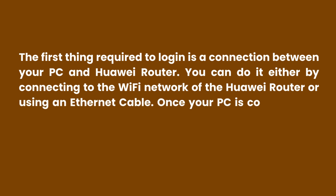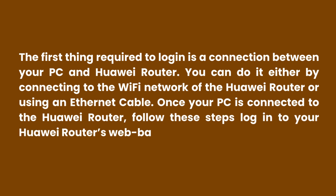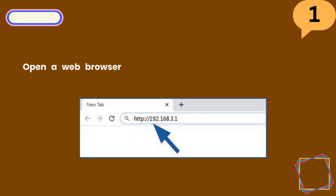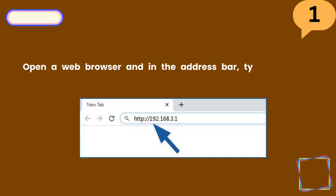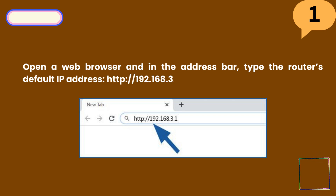Once your PC is connected to the Huawei router, follow these steps to log into your Huawei router's web-based management page. Step 1: Open a web browser and in the address bar, type the router's default IP address: http://192.168.3.1 and press Enter.